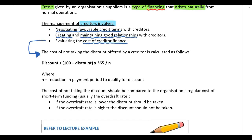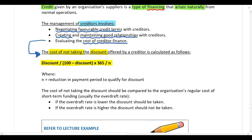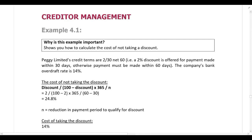The formula in your notes is used to calculate the cost of not taking a discount. If a creditor offers you a discount for early settlement — for example, pay your account within 30 days and get a 5% discount — the cost of not taking that discount is calculated using this formula. Please jump to lecture example 4.1.